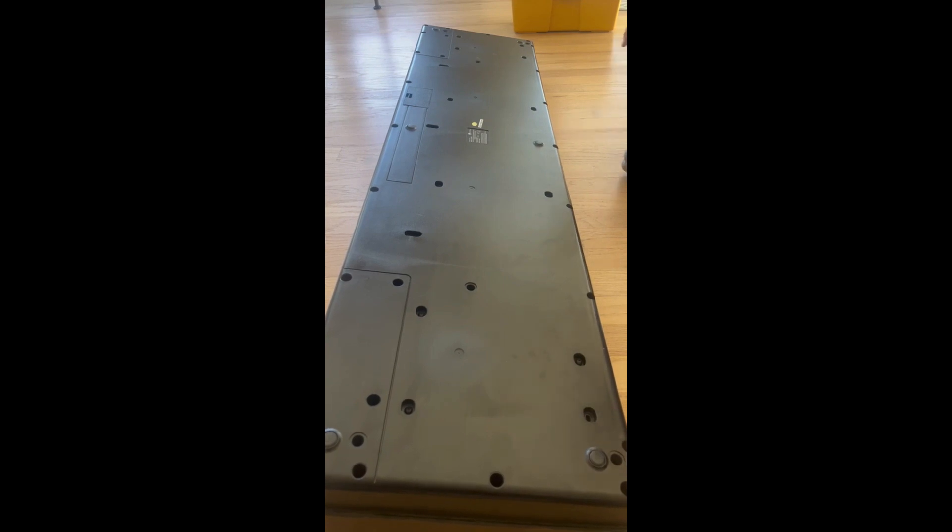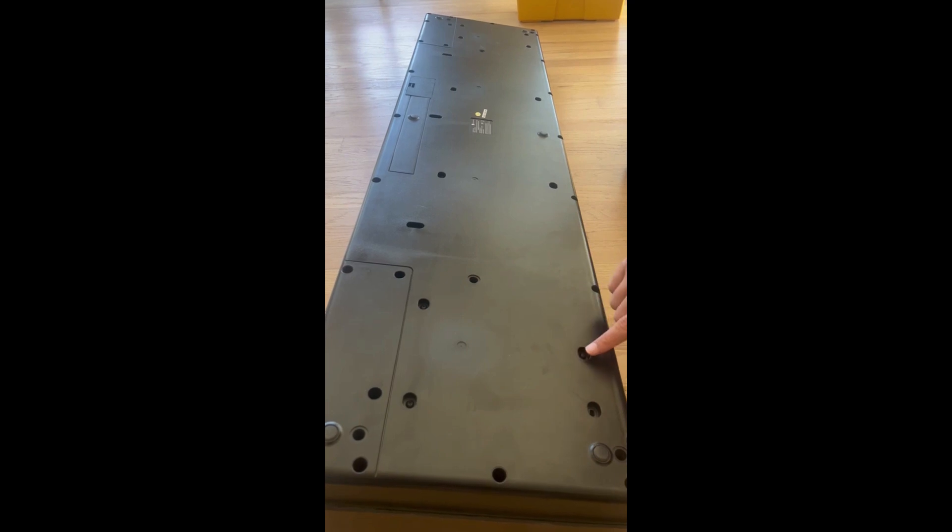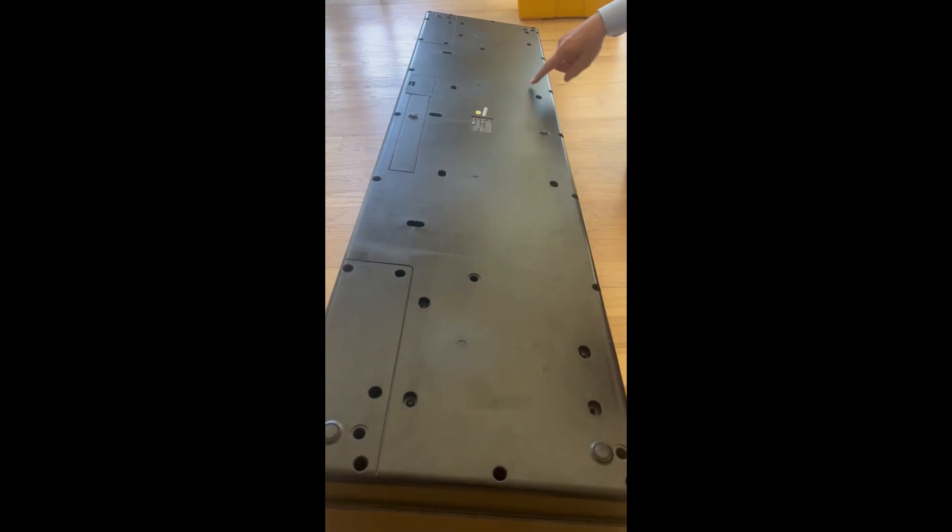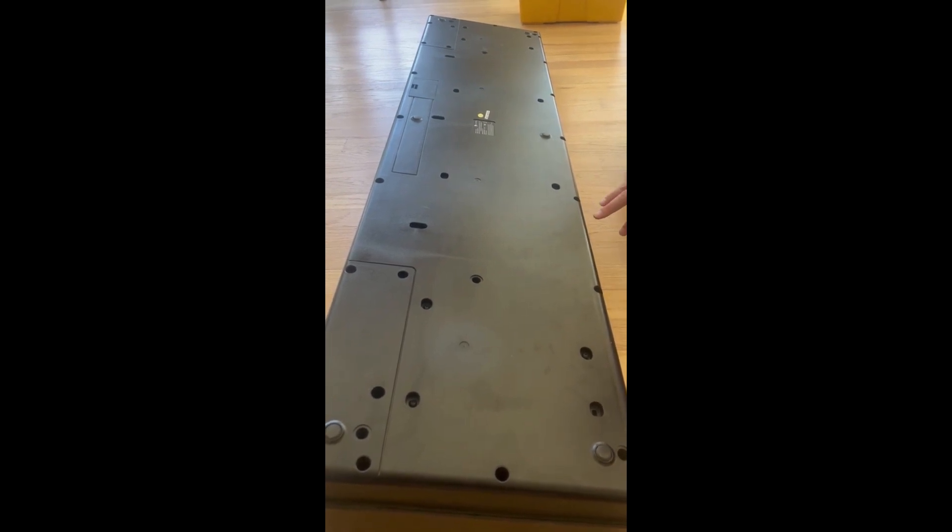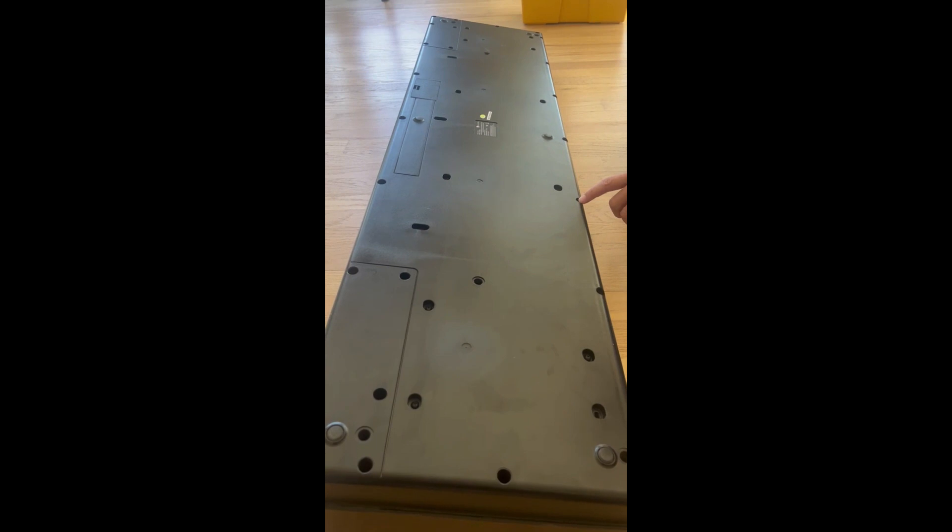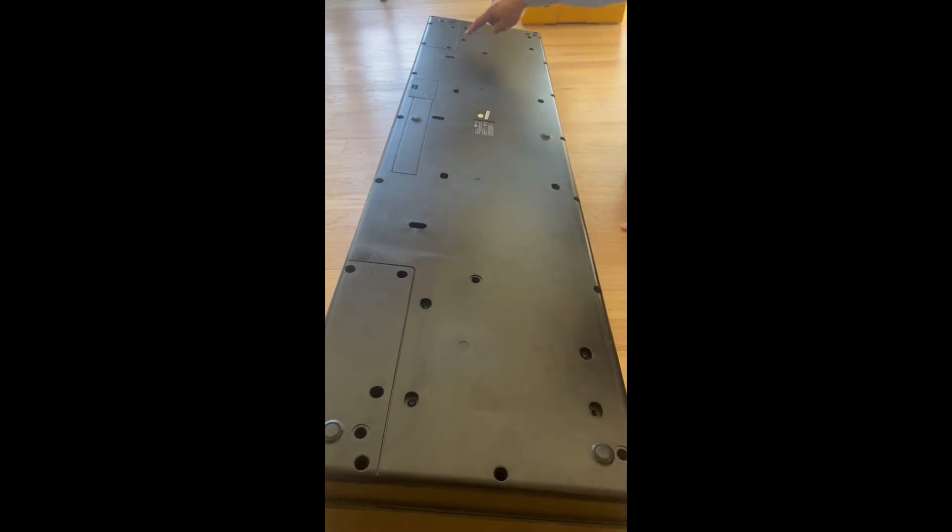The only screws that you really don't have to take out are, if you flip it over to the front of the keys, there's a row of shallow Phillips screws here. You can leave those in, but you'll spend most of your time taking apart the piano by just unscrewing from all these deep screw holes and then the back row of shallow Phillips screws.